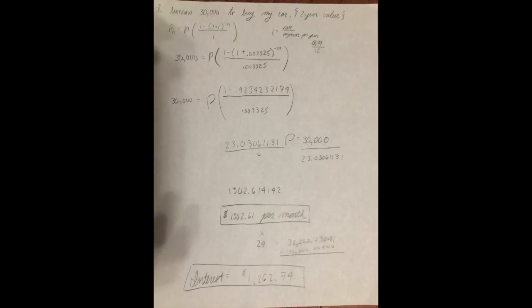That's your per month value. If you want to find how the interest affects it, you multiply by 24, because this is two years. Don't make the mistake of multiplying by 12, because I did that at first. But anyway, multiply by 24, you'll get $31,262.74, and that is that grand total. Subtract by $30,000 to get your interest value, and your interest value is $1,262.74.